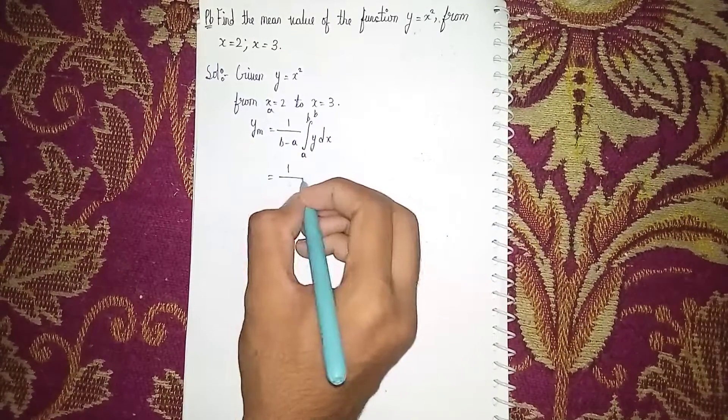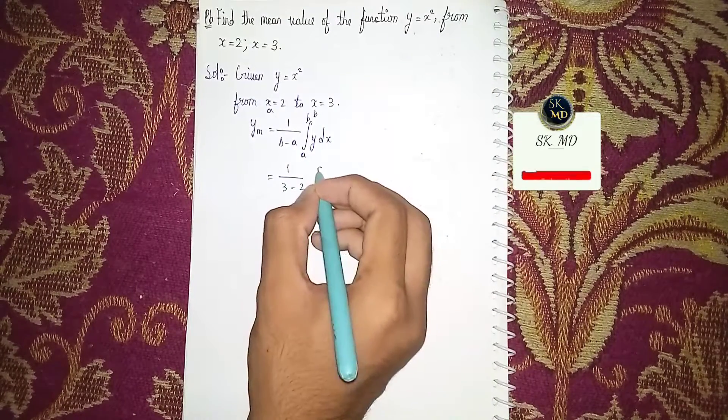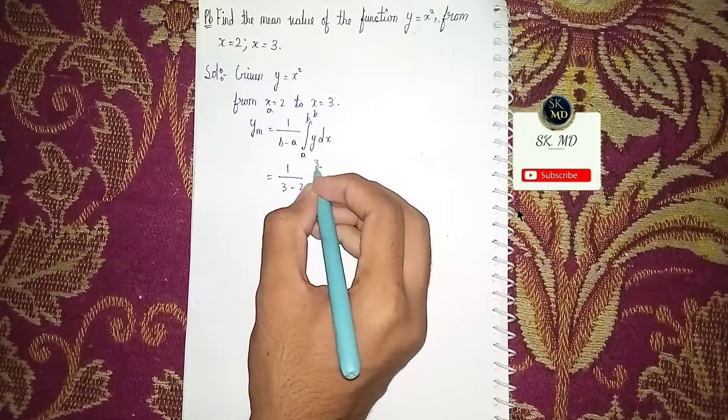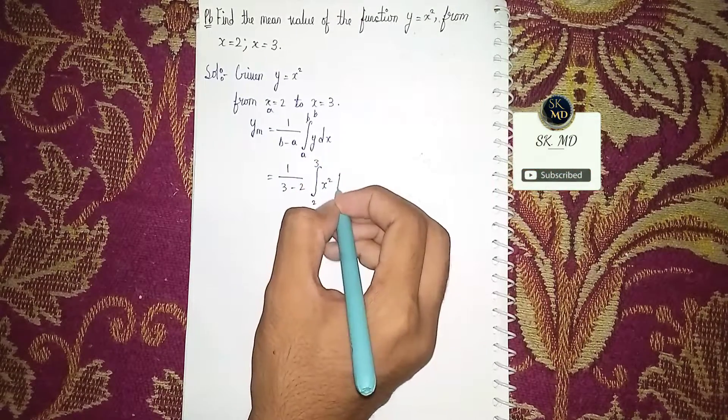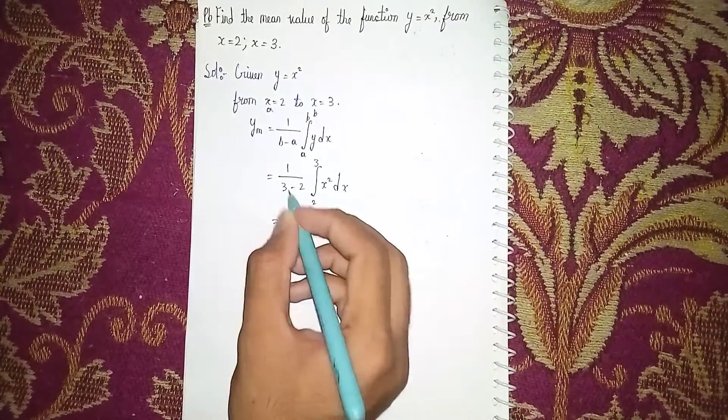So we have 1/(3 - 2) times the integral from 2 to 3 of x² dx. Now 3 - 2 = 1, so 1/1 = 1.